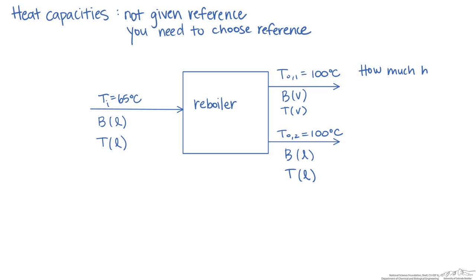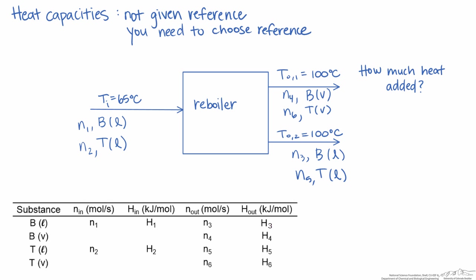The first thing we're going to do is put together an enthalpy table and select a reference. So again, we can choose any reference we want, but look at what happens when we set as our reference benzene liquid and toluene liquid at 65 degrees C and 1 atmosphere. Again recalling, this is when the enthalpy will be zero. And we're going to assume that the system is operating at one atmosphere. So take a look at our table. Because H1 and H2 are at our reference state, therefore they're going to equal zero. And that means that's two less enthalpies that you need to calculate.